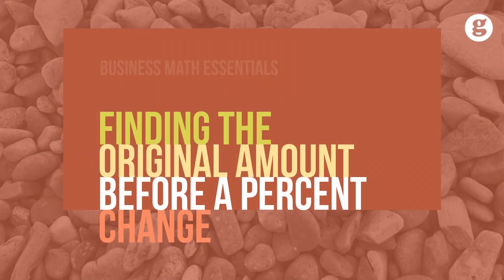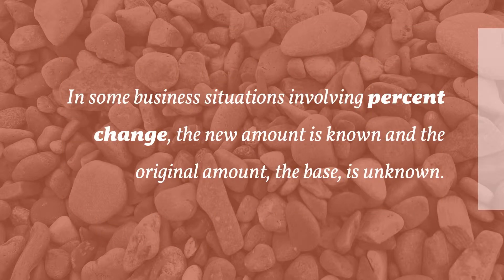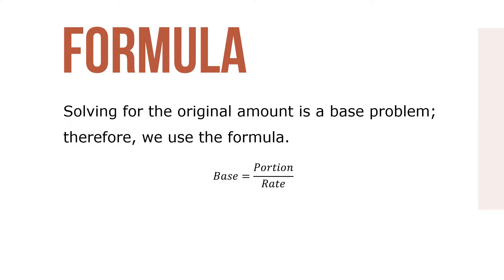Let's take a look at finding the original amount before a percent change. In some business situations involving percent change, the new amount is known and the original amount, the base, is unknown. Solving for the original amount is a base problem, therefore we use the formula base equals portion over rate.